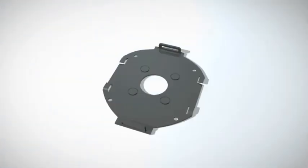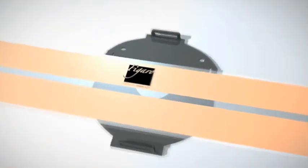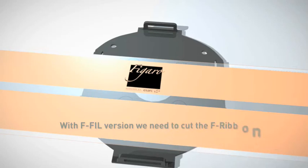With F-FIL version, we need to cut the F-ribbon. This is a very important point of the installation because a wrong connection can damage FIGURO or the sound quality. But don't worry, it's easy.